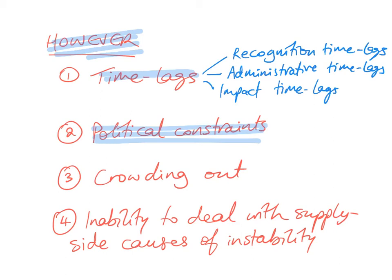There's also the risk of crowding out. If the government expands fiscal policy too much and borrows too much, this will raise interest rates and hence make it more difficult for private investors to borrow from the markets.